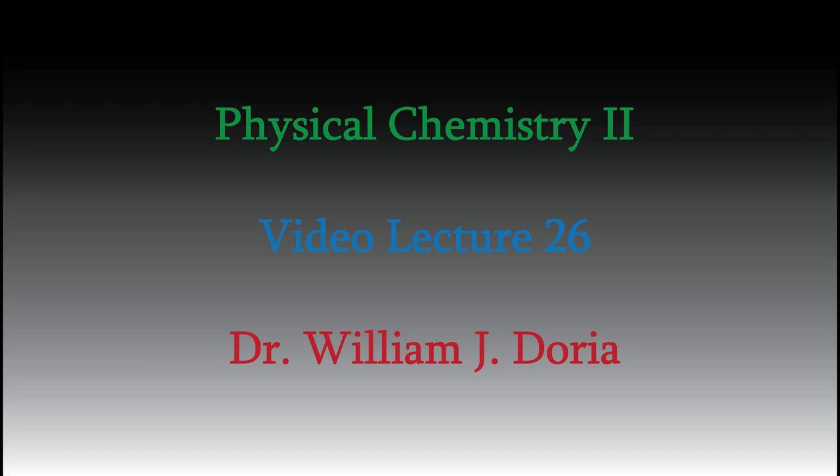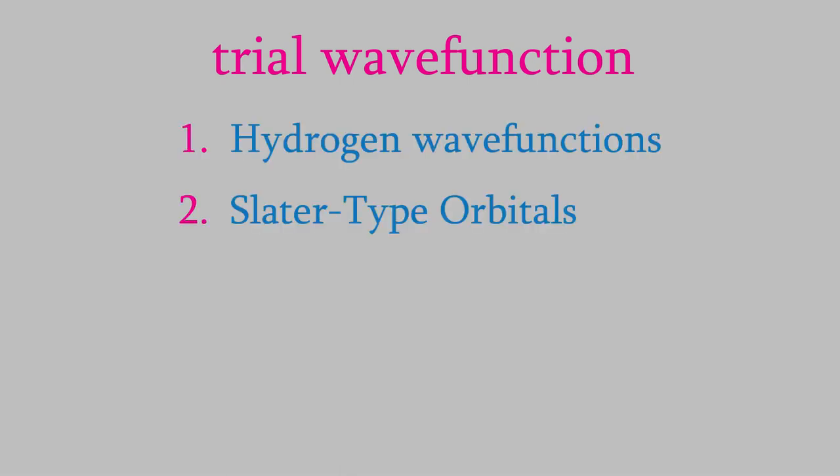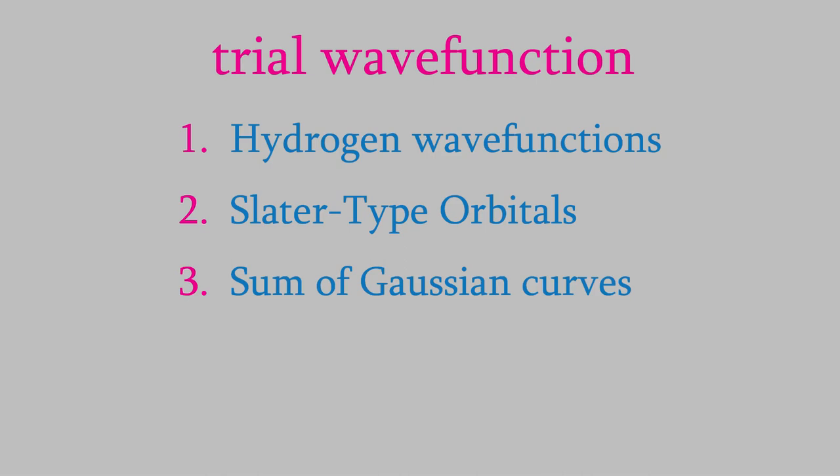Hi and welcome back to my series of videos for physical chemistry 2. In the last video we talked about how we choose what form a trial wave function should have. We saw that a wave function can be estimated using hydrogen wave functions, Slater-type orbitals, or a sum of Gaussian curves. Actually, a trial wave function can be anything at all, even something as simple as a simple sine wave. But our calculations will give much more accurate results if the trial wave function bears some resemblance to the real wave function, as we saw in the last video.